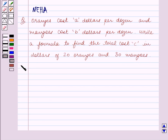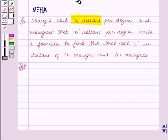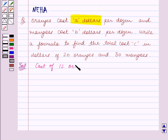Let's start the solution now. We are given that the cost of one dozen of oranges is A dollars. So cost of 12 oranges is equal to A dollars. This implies cost of one orange is equal to A upon 12 dollars.